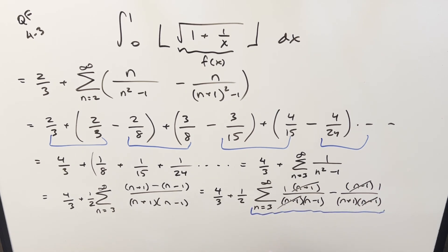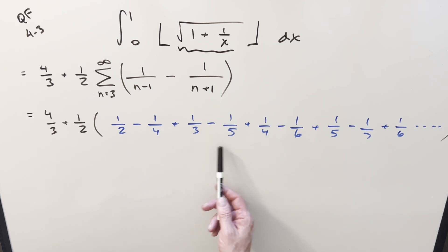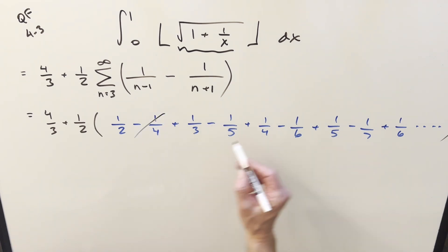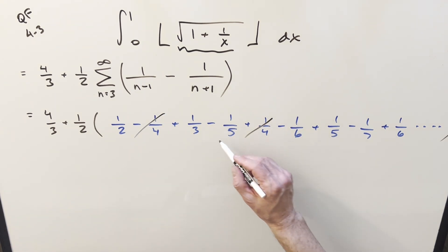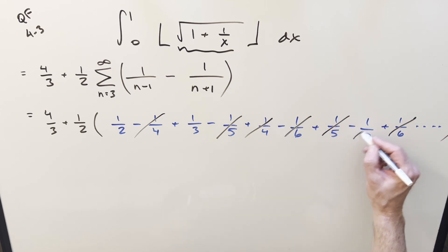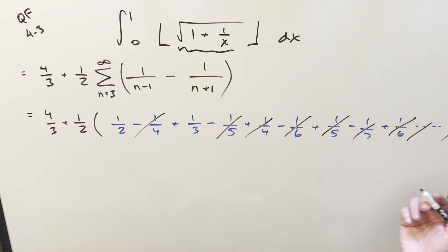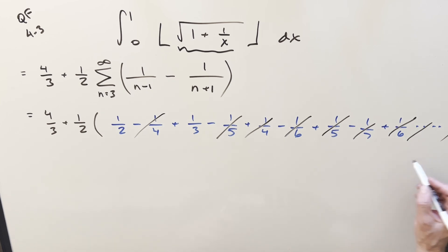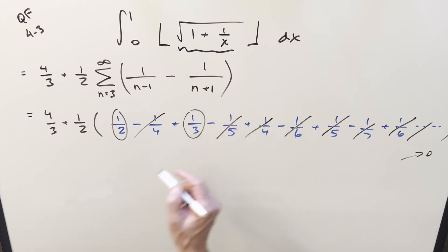For our telescoping series, starting at n equals 3 and writing out terms, we get extensive cancellation: 1 over 4 cancels, 1 over 5 cancels, 1 over 6 cancels, and so on. Terms on the end go to zero as n goes to infinity, so we only care about the surviving terms: 1 half and 1 third. Together those give 1 half plus 1 third equals 5 over 6, then multiplied by 1 half gives 5 over 12.